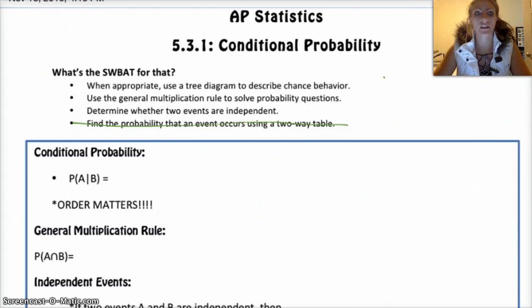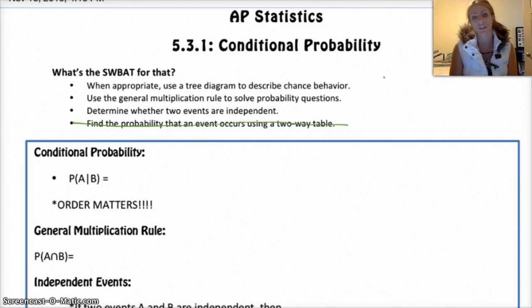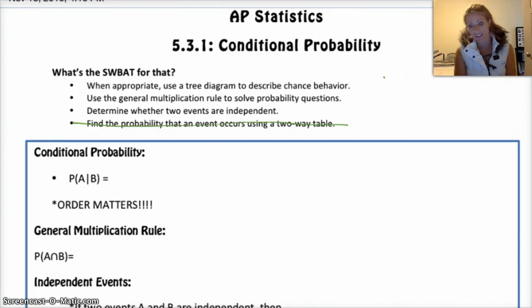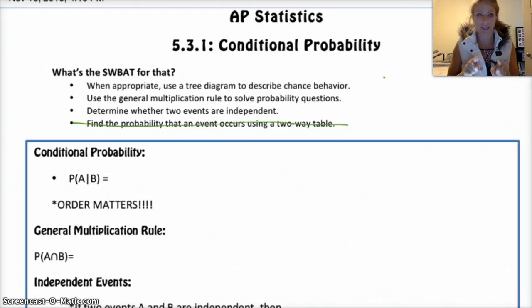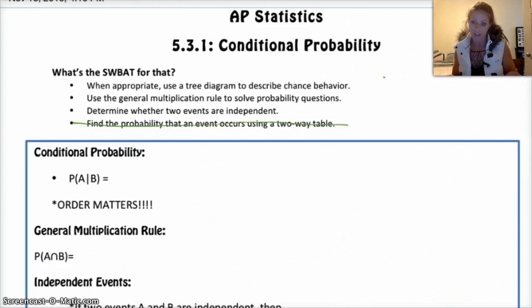Conditional probability is basically just the probability of something given that something else has already happened, or that you know more information. So, like, the probability of rolling a 6 given that the last roll was also a 6. Rolling a die, the chance of getting a 6 the first time and the chance of getting a 6 the second time — those are independent events, and therefore they're not going to affect the probability of the other one occurring.